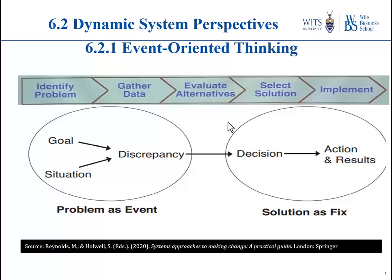The feedback-oriented approach tries to incorporate feedback into the process of decision-making when understanding and solving a problem. While event-oriented thinking is very common, pragmatic, and action-oriented — useful when firefighting and needing to make decisions quickly — it will not give a full picture of what the structure of the problem is. From an event-oriented perspective, you have a goal, observe a discrepancy between the goal and the situation, make a decision, take action, and the solution is a fix to that particular problem.